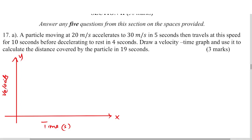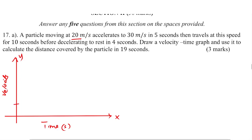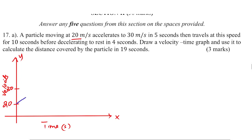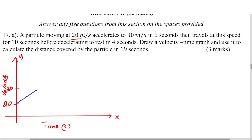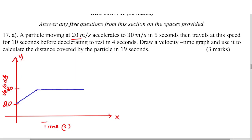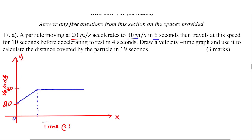This particle starts at 20 meters per second, so we indicate 20 there. Then it accelerates to 30 and maintains a speed. So we sketch from that point, then it accelerates to 30. It accelerates to 30 meters per second in 5 seconds, so this is 0 to 5. Here we have 5 seconds.